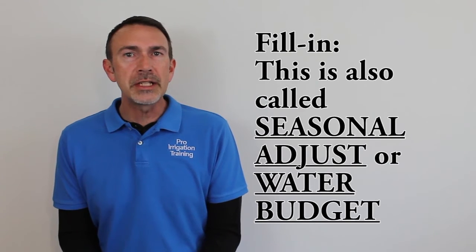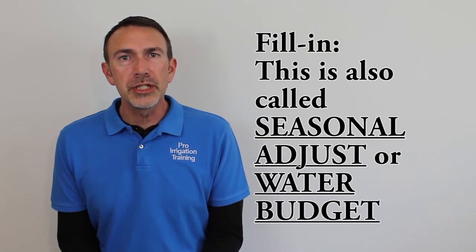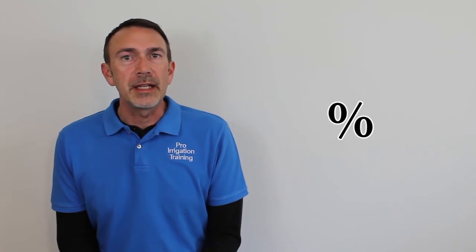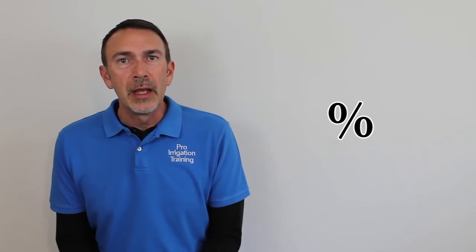In this lecture, we're going to talk about the timer feature called global adjust. It's also called seasonal adjust or water budget. Sometimes you'll see it called adjust water percentage. Usually if there's an icon on a timer, it's a percentage symbol. This is a good feature, but I rarely see anybody ever use it.